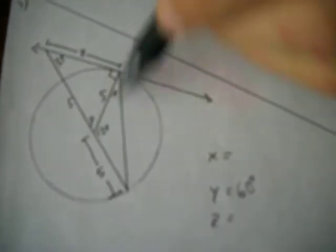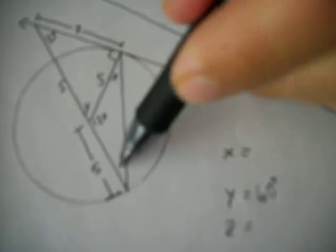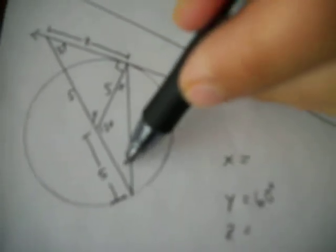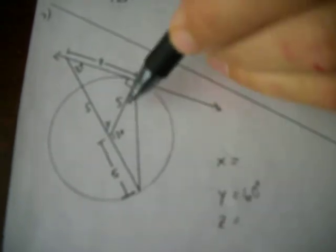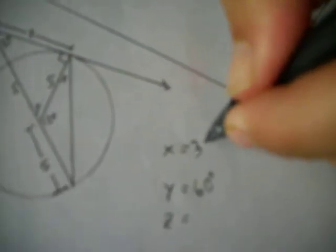And then x should be easy as well because after all, this is an isosceles triangle, meaning this is also x. So 180 minus 120 is 60. Therefore, x has to be half of 60 or 30 degrees.